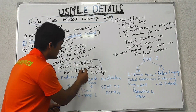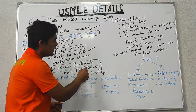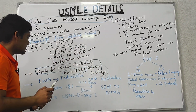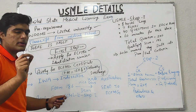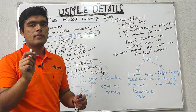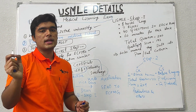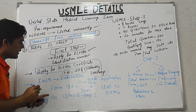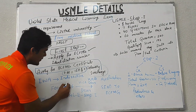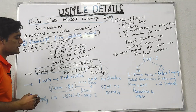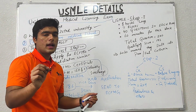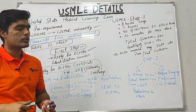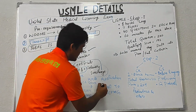The ECFMG certificate fee is $150 plus delivery surcharge. When you open the ECFMG website, there is an IWA section — the Interactive Web Application. You have to download Form 186 from that IWA section, fill it out, get it signed by the vice dean or dean of your university, and send it to ECFMG.